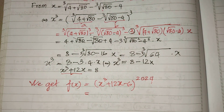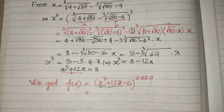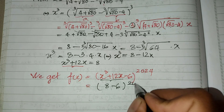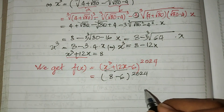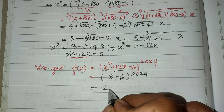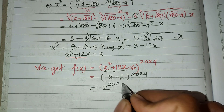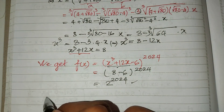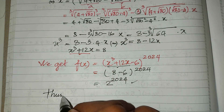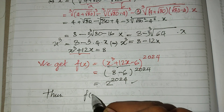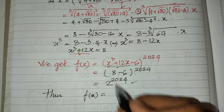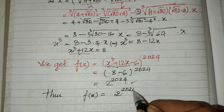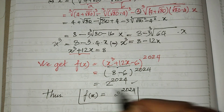We can now replace by 8, and we get x minus 6, power 2, and 24. So f(h) equals (x minus 6) power 2 plus 24, and that is our solution.